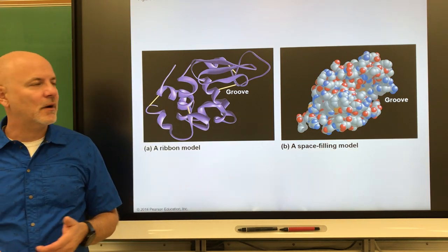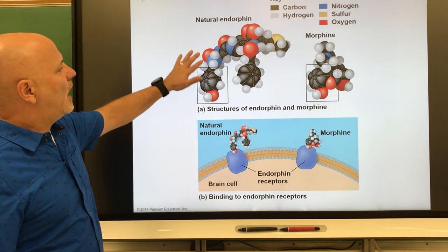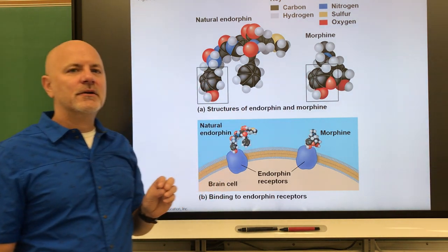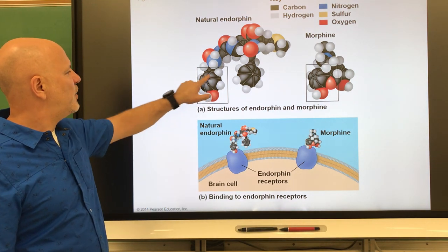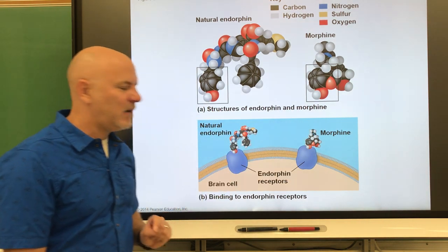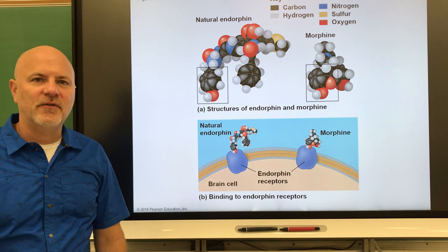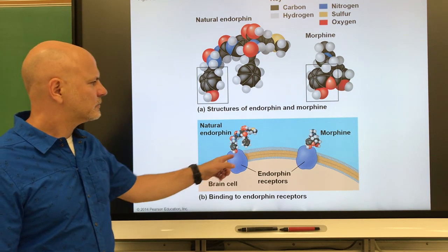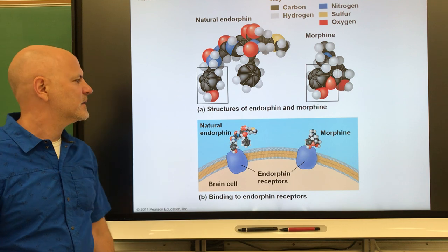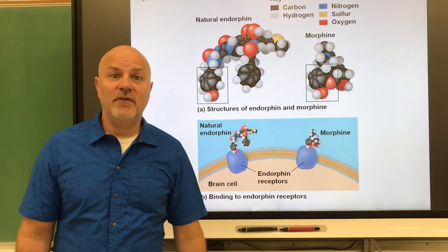A molecule's shape determines its function. For example, the naturally occurring hormone endorphin and the drug morphine share an identical region in their molecular structures. Because of this, both bind to pain receptors in the brain, preventing those cells from interpreting pain. Endorphins are produced naturally during exercise, and morphine binds to the same receptors, producing the same pain-inhibiting effect.